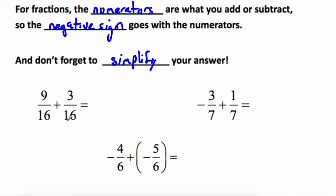So 9 sixteenths plus 3 sixteenths, they have the same signs. So we're going to add them together. 9 plus 3 is 12. Denominators stay the same. And then don't forget to simplify. 12 and 16 can be divided by 4 which gives me an answer of 3 fourths. They're both positive so it stays positive.